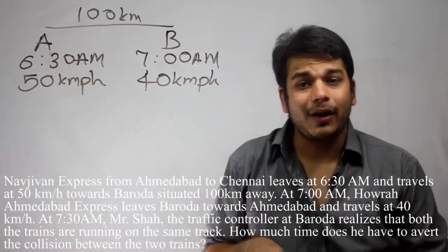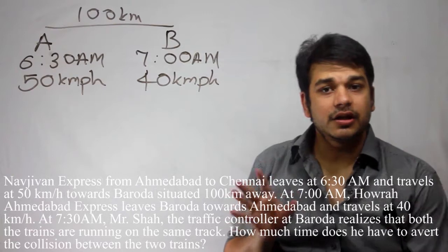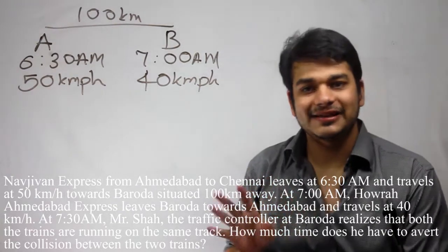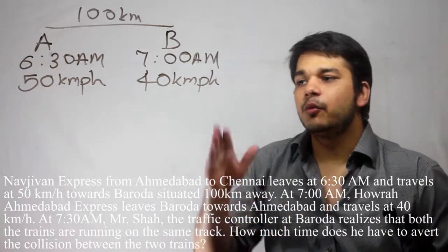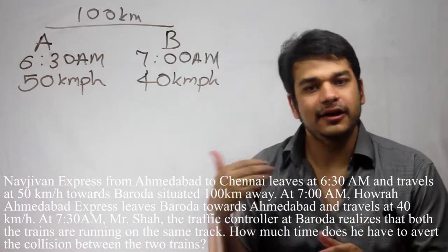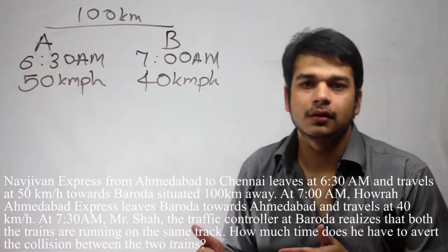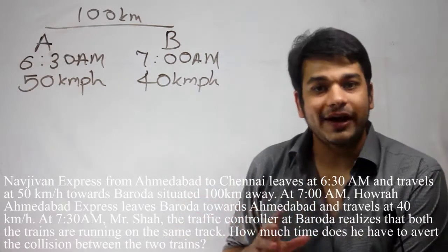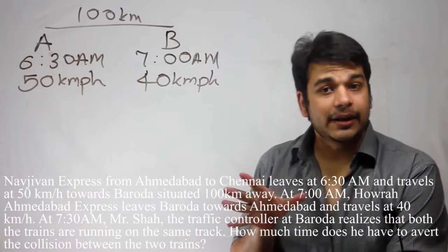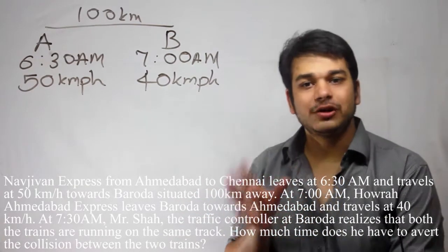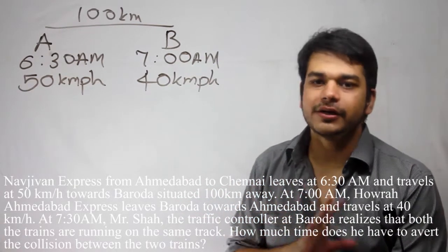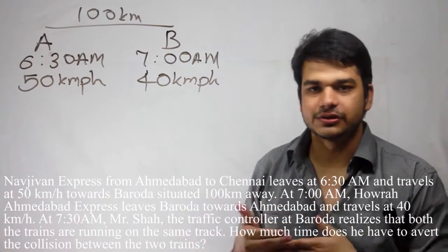At 7:30, the controller realizes that both the trains are running on the same track, and we have been asked to find out how much time he actually has to avoid the collision.